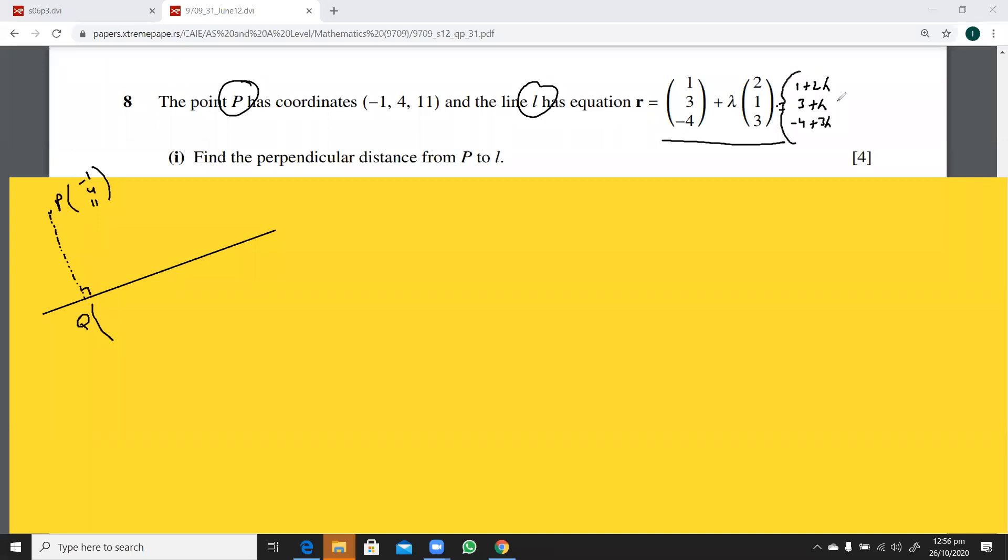So this can be any points coordinates on this line, in terms of lambda. So this is 1 plus 2 lambda, 3 plus lambda, and this is minus 4 plus 3 lambda.